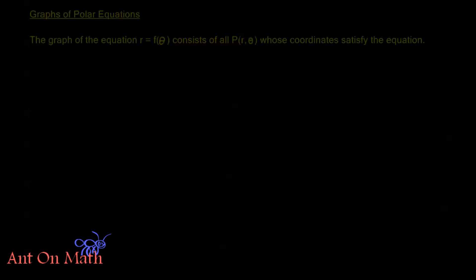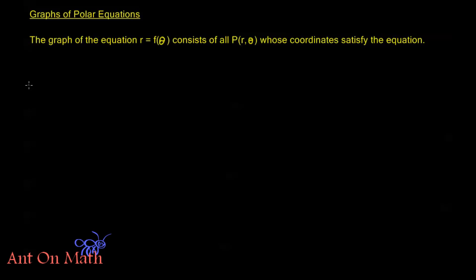Hello and welcome back to Anton Math. In this video we're going to start looking at some graphs of polar equations, focusing on some very basic graphs just so we get used to the idea. In subsequent videos we'll look at more complicated graphs. The graph of the equation r equals f of theta consists of all points r theta whose coordinates satisfy the equation.